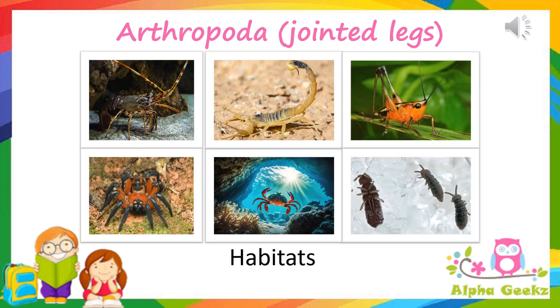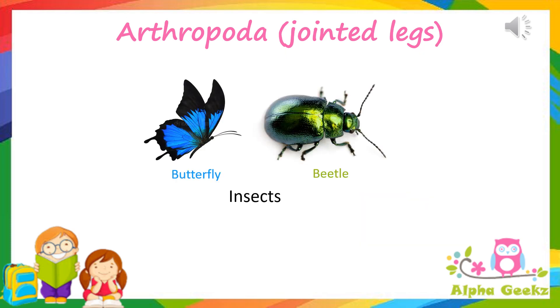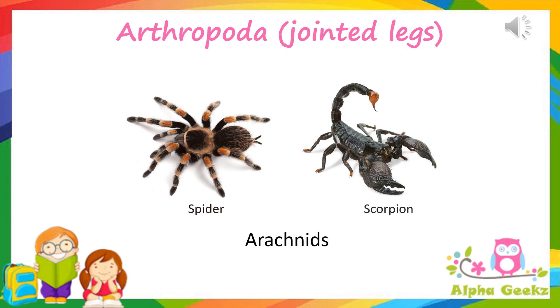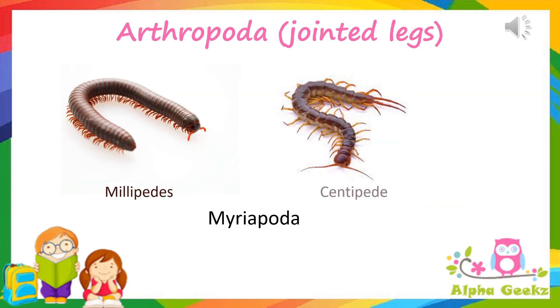Arthropods are found in all parts of the world in a wide variety of environments, from deep sea to the frozen Arctic regions. Arthropods are further divided into insects, arachnids, crustaceans, and myriapods.